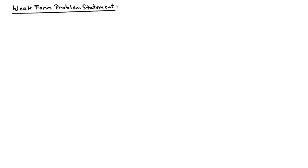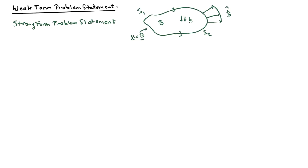In this video, I'd like to talk about the weak form problem statement. This is a way of restating the classical problem that appears in continuum mechanics. The classical statement is what I'll usually call the strong form problem statement. Let me review that first. We start with the body B, with some body forces, little b, applied to it. Then on part of the boundary, we have applied tractions.